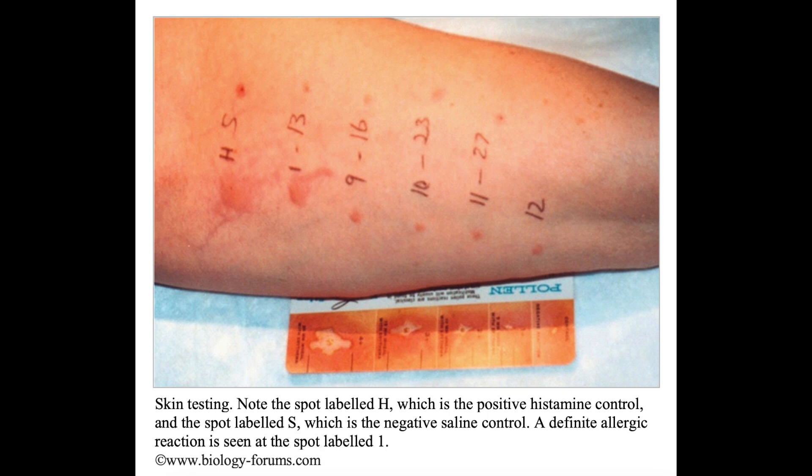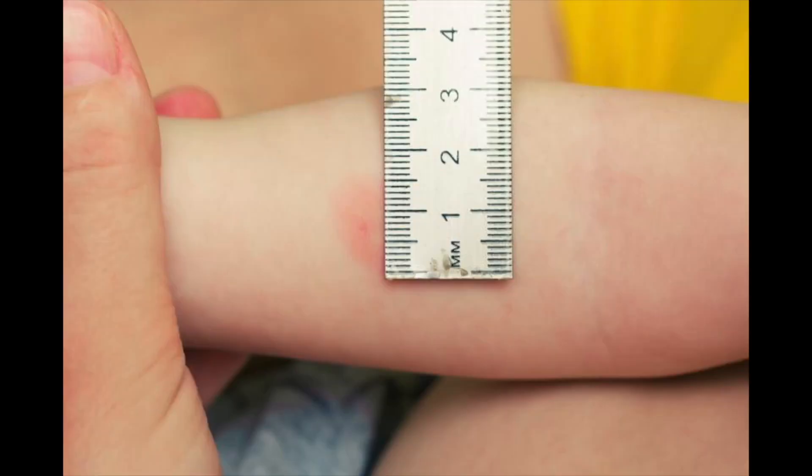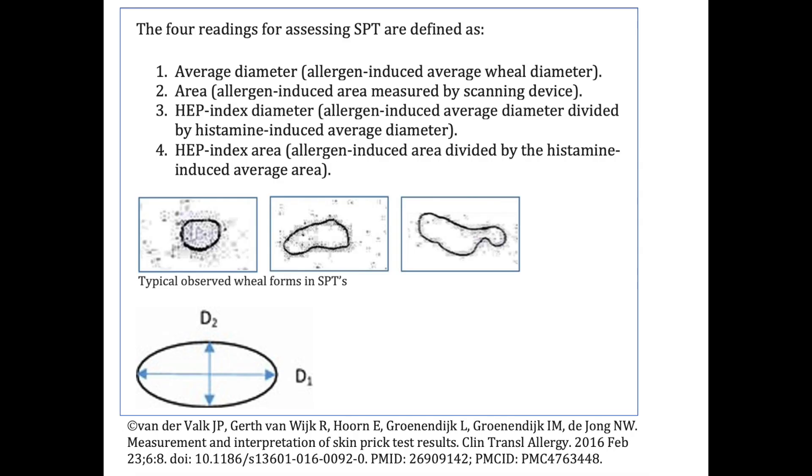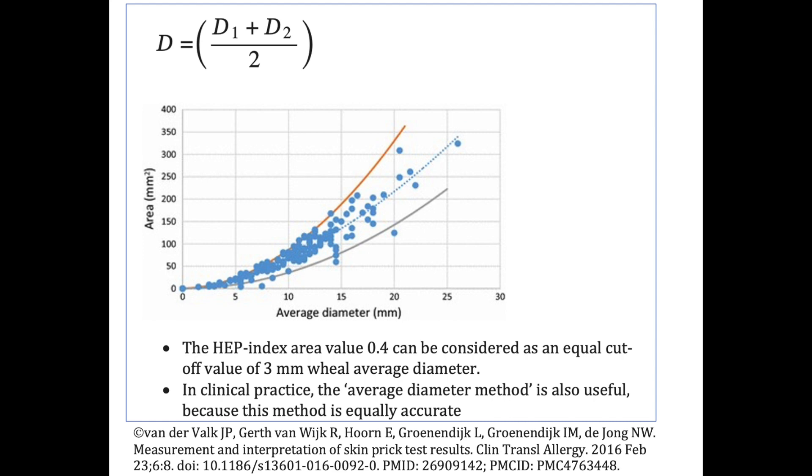The test sites including positive and negative controls should be read 15 to 20 minutes after pricking. The negative and positive controls should be measured first. The largest diameter of the wheal of each test site is measured; another method is to take an average of the largest diameter and the diameter perpendicular to it. A positive reaction is defined as the size of the wheal being more than 3 millimeters. The sensitivity and specificity of SPT is about 70 to 90% for inhaled allergens and about 30 to 70% for food allergens.